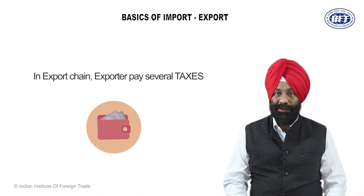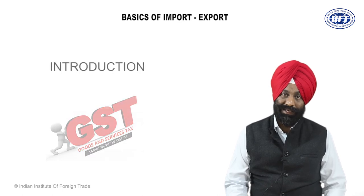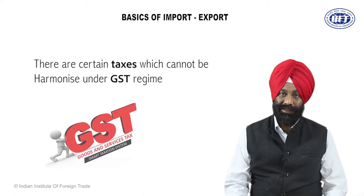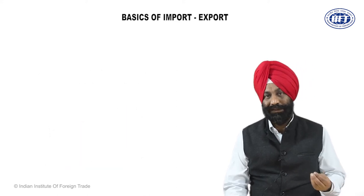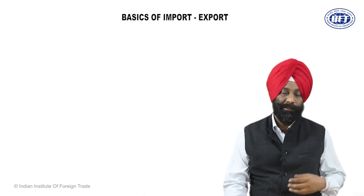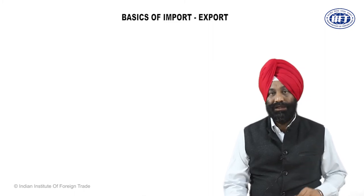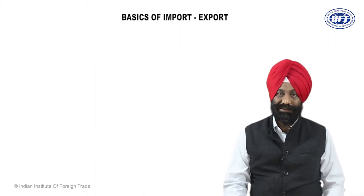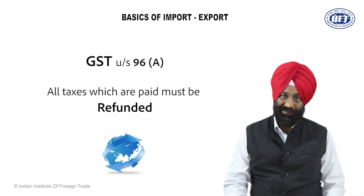In the export chain, an exporter pays several taxes. With the introduction of GST, many taxes have been harmonized into one tax — one of the greatest reforms by this government. But there are certain taxes which cannot be harmonized within the GST regime — for example, import duty or custom duty. Under GST, under Section 96, the government has made it very clear that all taxes which are paid must be refunded back.